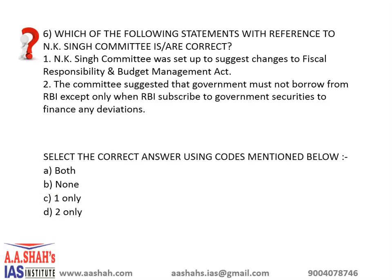Statement 2 is incorrect because there are basically three conditions, not one. The committee suggested: first, when the RBI subscribes to government securities to finance any deviation; second, when the centre has to meet a temporary shortfall in receipts; and third, when the RBI purchases government securities from the secondary market. Therefore statement 2 is incorrect.